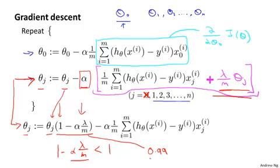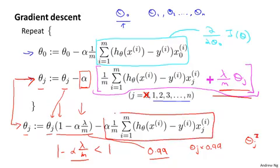And so the effect of our update to theta j is we're going to say that theta j gets replaced by theta j times 0.99. So theta j times 0.99 has the effect of shrinking theta j a little bit towards 0. So this makes theta j a bit smaller. More formally, this makes the squared norm of theta j a little bit smaller. And then after that, the second term here, that's actually exactly the same as the original gradient descent update that we had before we added all this regularization stuff.